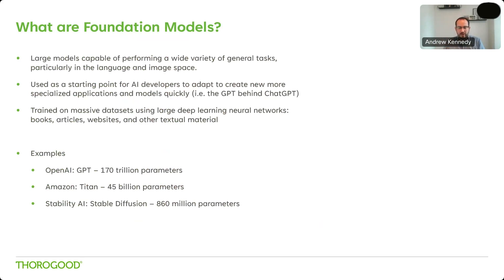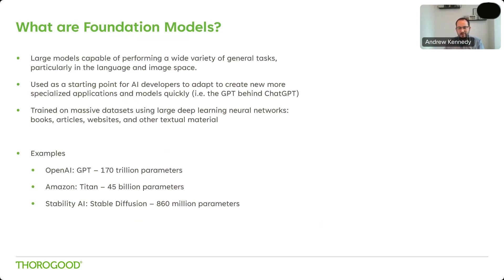These large foundation models are trained on massive datasets using large deep learning neural networks. Language models like GPT are trained on books, articles, websites, and other textual material — generally whatever the developers can get their hands on that they think is good for training. By training on that large collection of data, a large language model will have an understanding of language: how words are used, how words appear in context alongside other words — that basic understanding of language that you can then apply and specialize to your own applications.